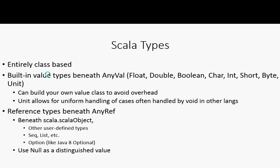Then there's Unit — it's kind of a value where you don't care what the possibilities are, and it's often used to represent what 'void' would be. The idea is that you can pass in a function which returns Unit and use it as if it's returning a value even though you don't care about that value. So void isn't a special case — instead, it's just a value you don't care about. That's the set of value types.